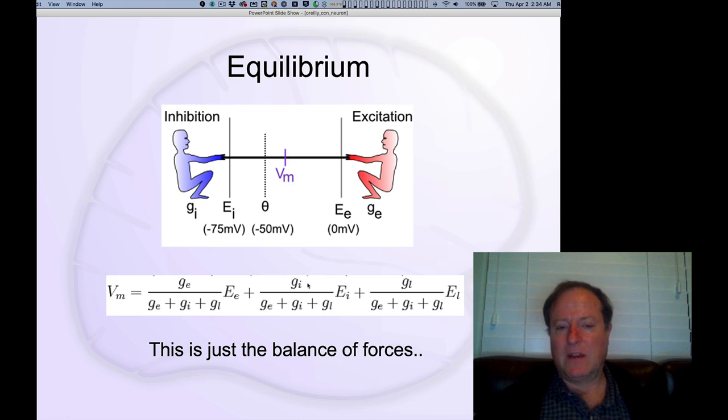And the same thing for each of the other terms. So GI over the sum of the same sum of all the other conductances. And then you're multiplying times kind of where those guys are pulling. So this is how strong is GE relatively.